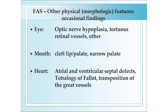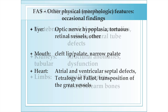Other morphologic features that are occasionally seen in children with fetal alcohol syndrome include abnormalities of the eye, cleft lip and palate, heart defects, vertebral abnormalities, renal abnormalities, and limb abnormalities, particularly fusion of the radius and ulna.